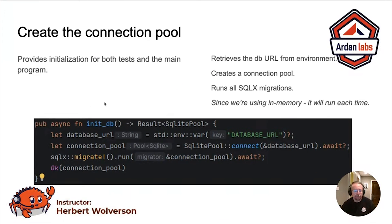Let's have a look at how we do this. We set the database URL. `std::env::var` is the quick and easy way to return a value attached to that key from the environment variable — database URL. The question mark there says if we don't find a database URL, bail out, because that's a fatal error.